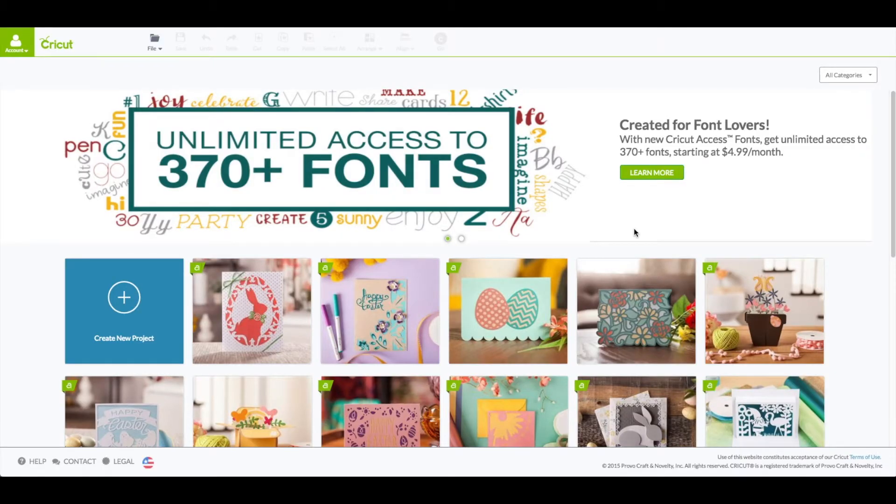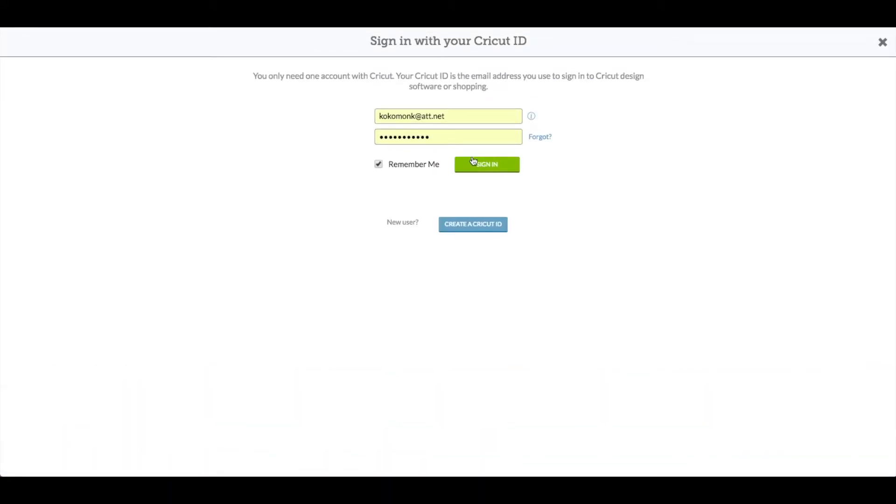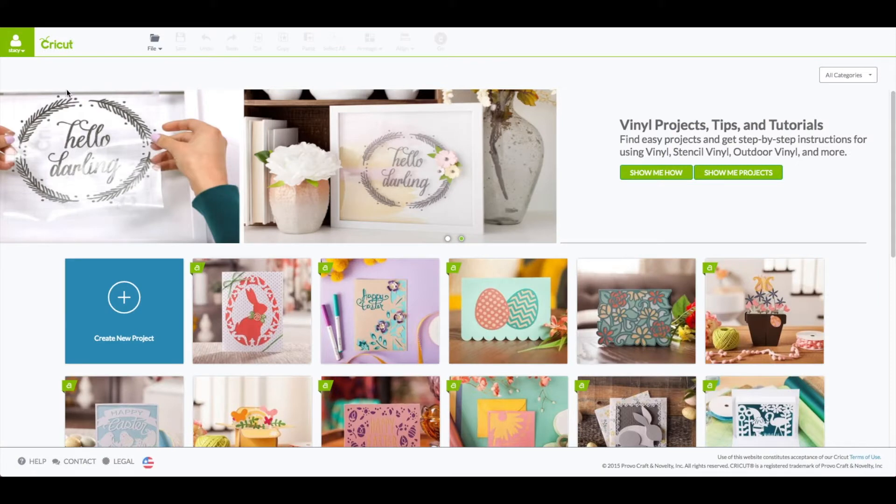At the computer you want to go to cricut.com/design. You will see this screen, upper left hand corner where it says account, click on that to sign in. Enter in your email and your password. When you see your name in that green box that verifies that you're logged in.